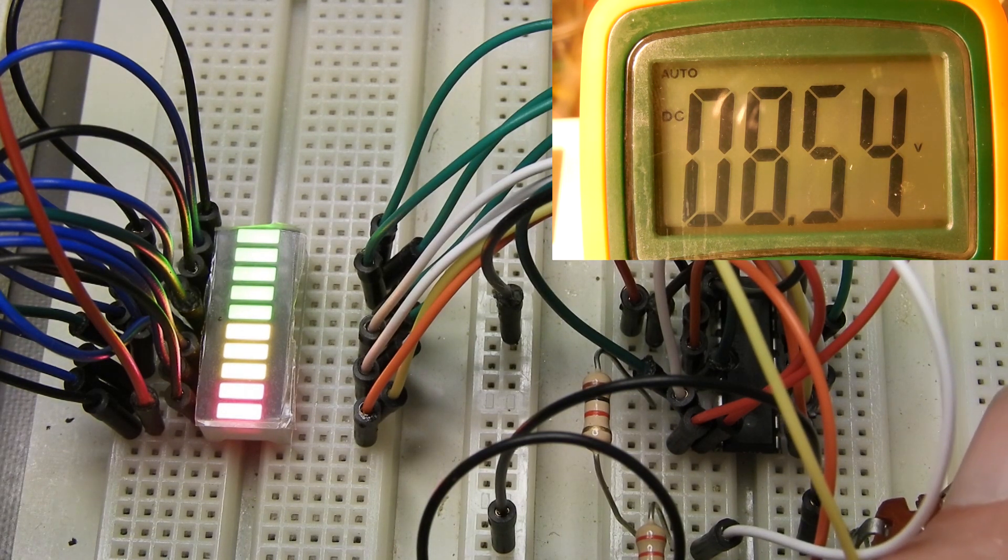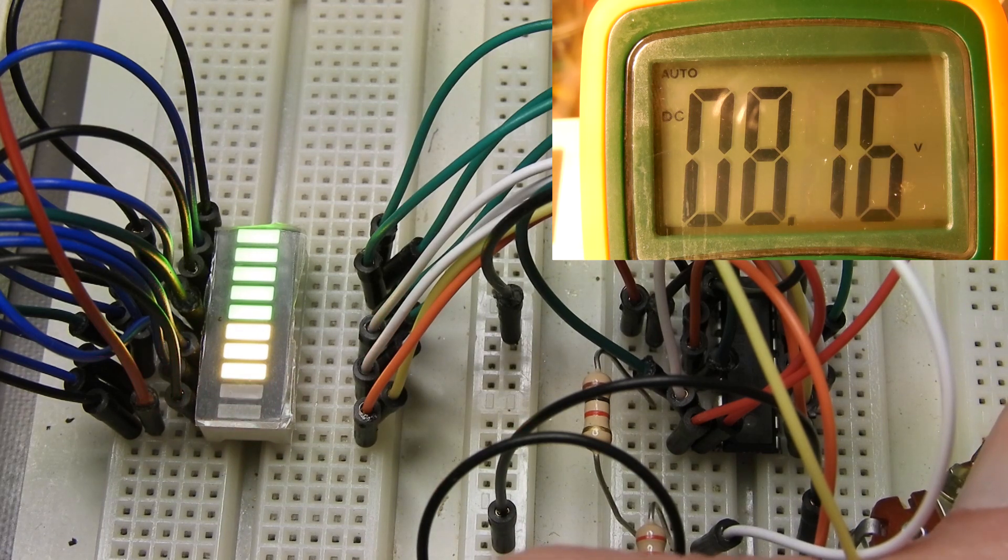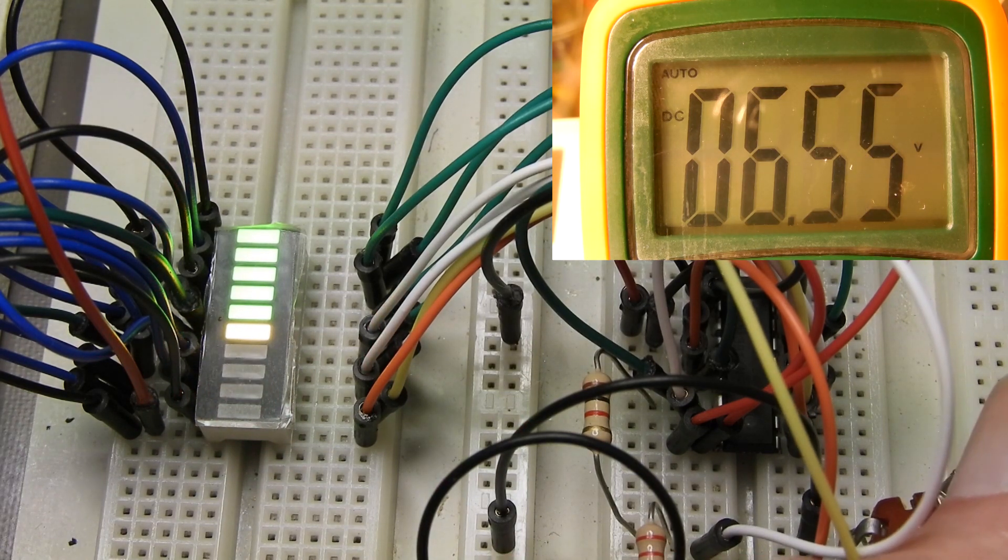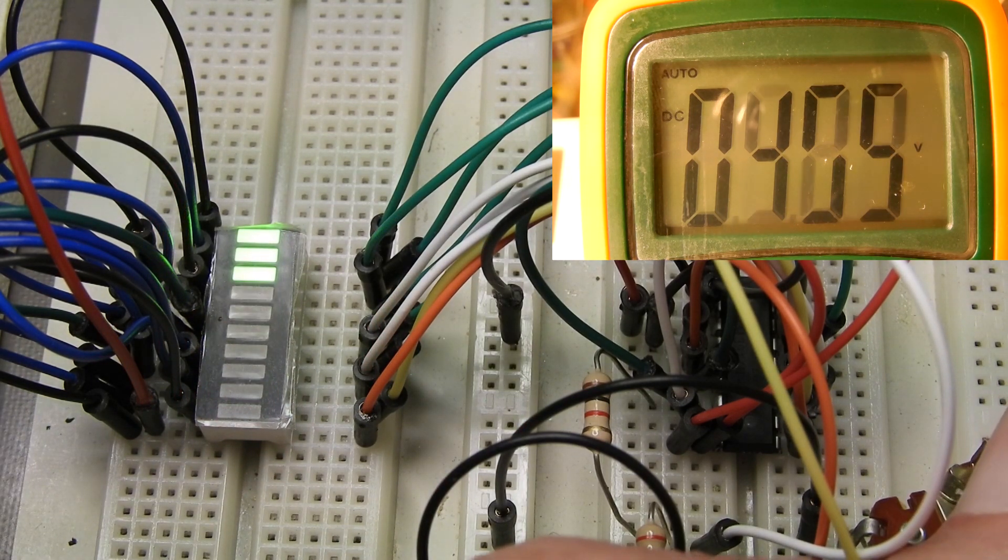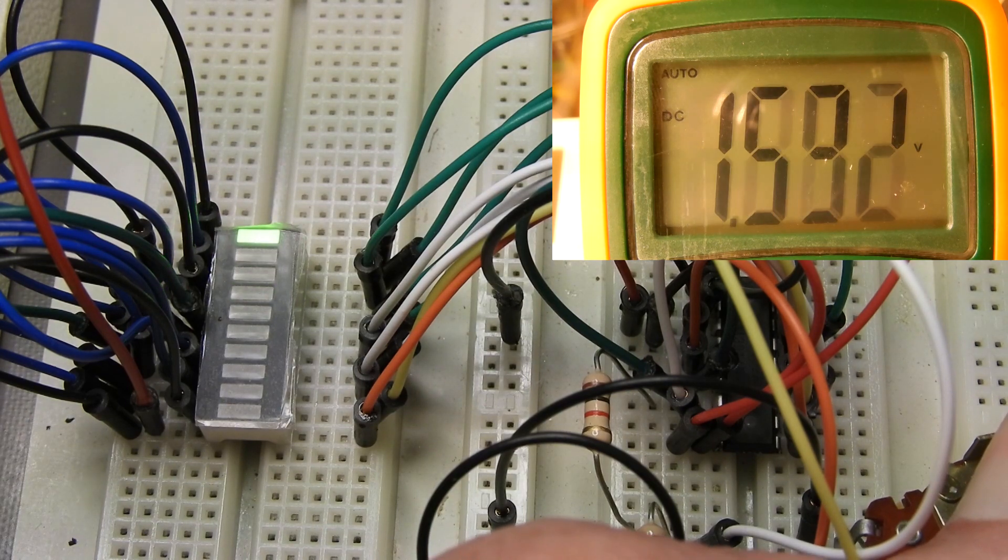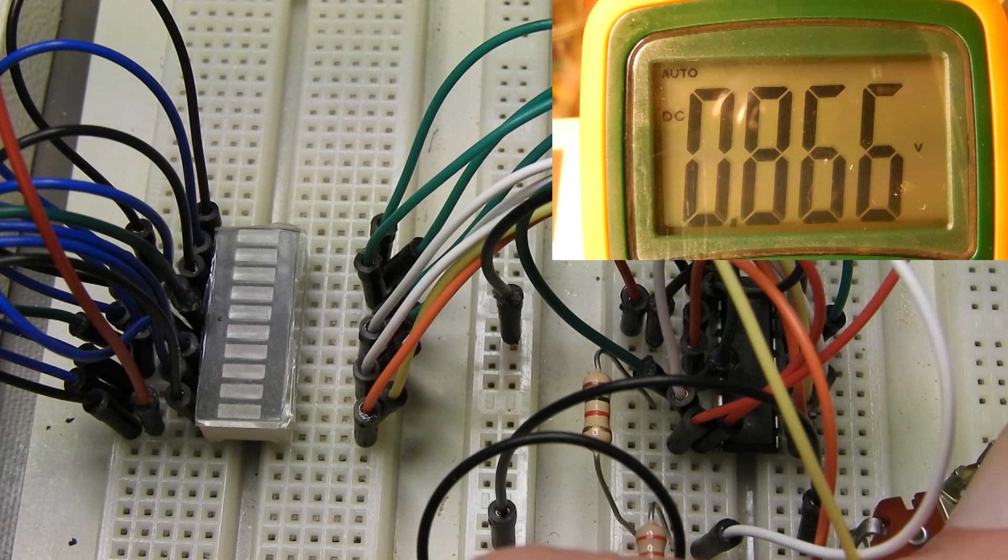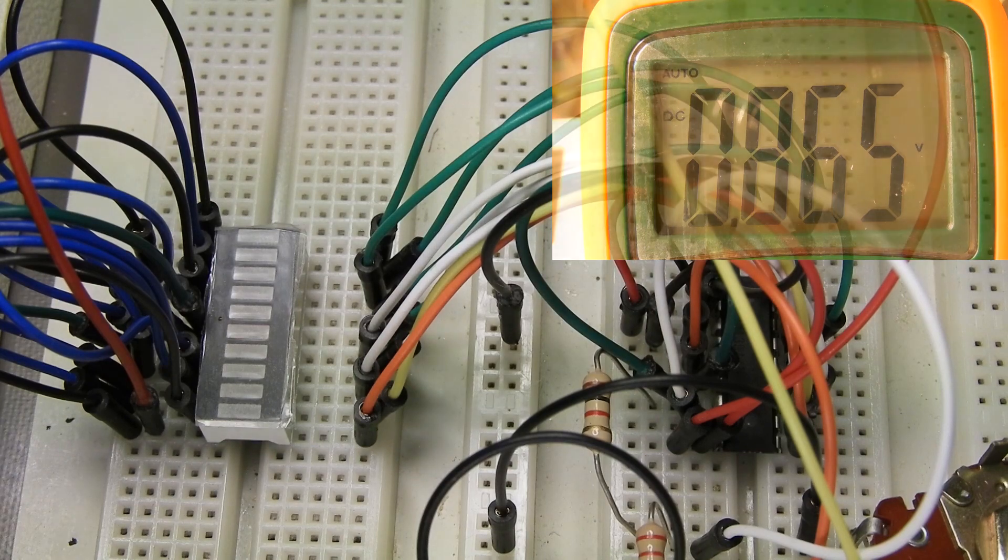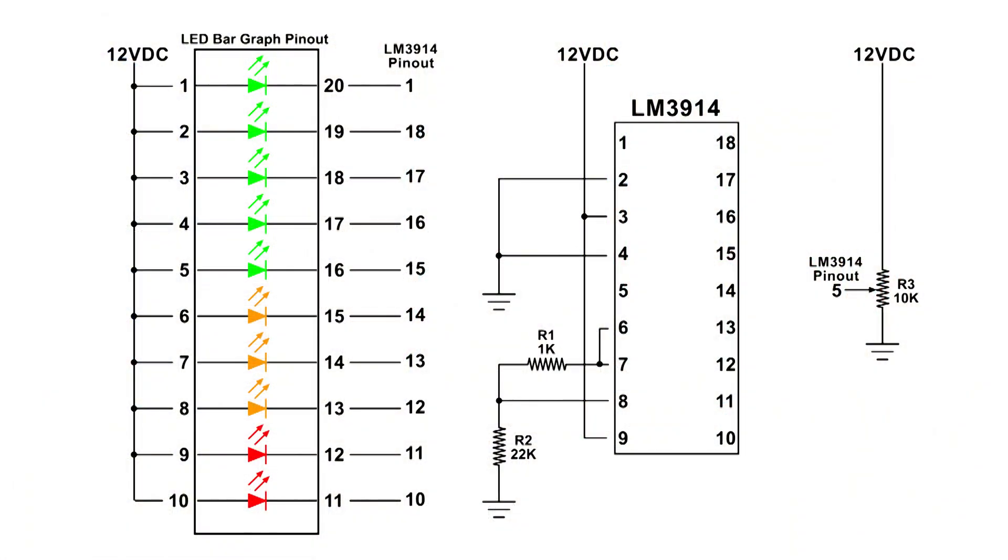Okay now they're all lit. Turn it back down. Here's the final diagram. If you take a look at R1 and R2, if you change those resistors you can change the scale or the voltage when the LEDs come on.